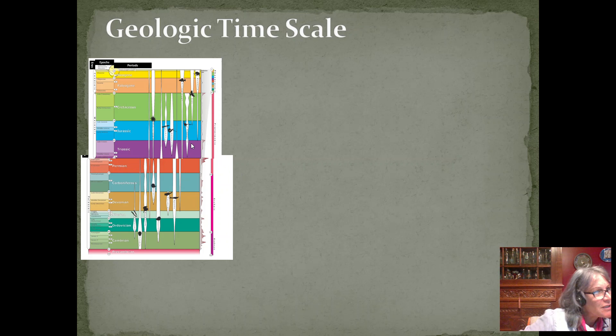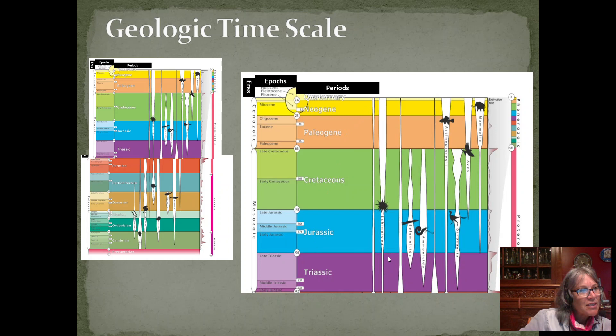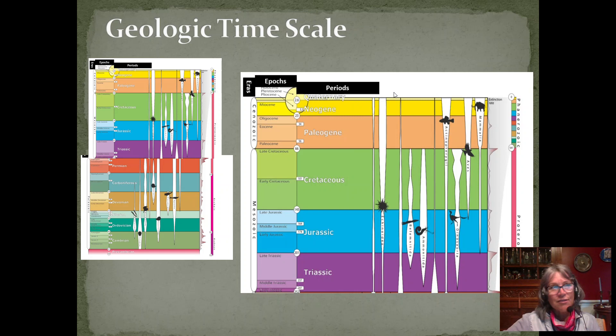As we look at geological time scales, the way they're typically positioned — the eras are the broadest category, then periods divide the eras into smaller segments, and then epochs divide those further. In this image, we see different groups of organisms, and the thickness of the band going from bottom to top indicates what's happening to the numbers in that population. Geological time scales are always structured with the most recent — present day — at the top, and as we go down it gets further and further back in time.